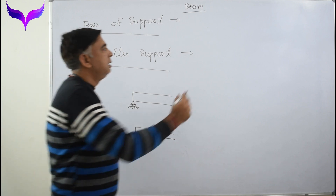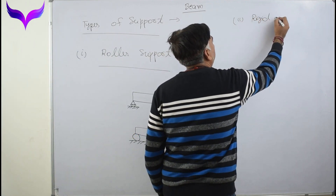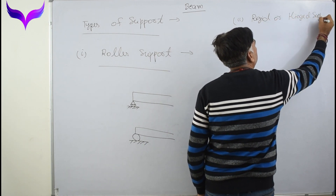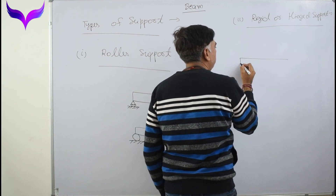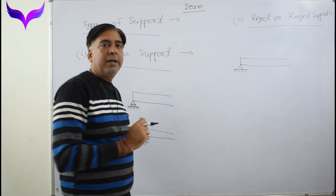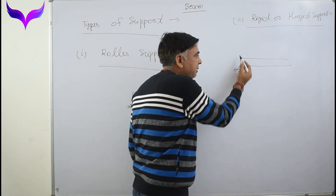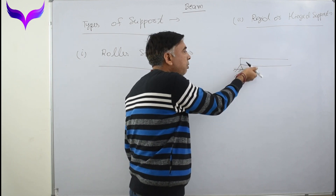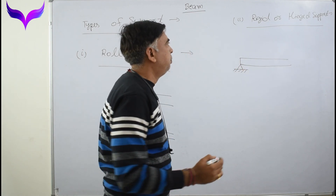The second type of support is a rigid or hinge support. At this end, the beam does not move in horizontal direction or in vertical direction, but it can rotate about this point. This type of support is called a hinge or pin support.